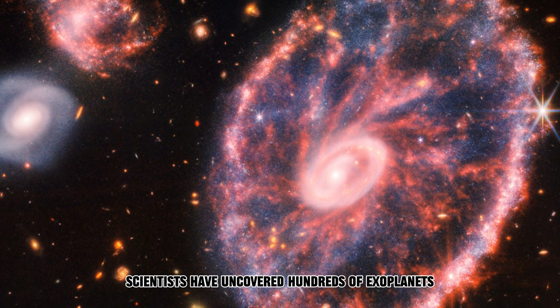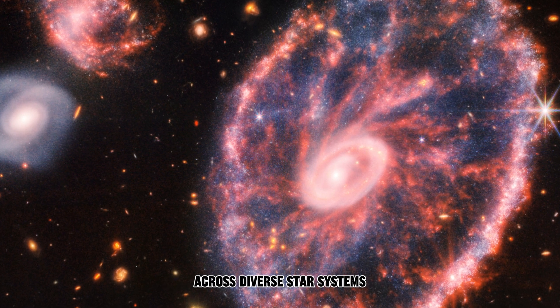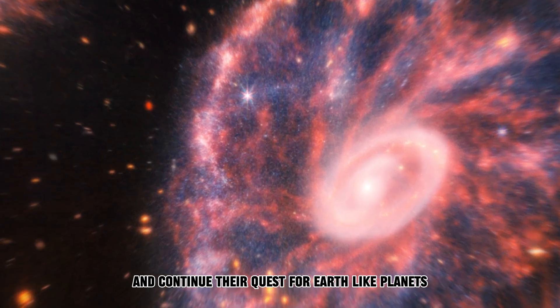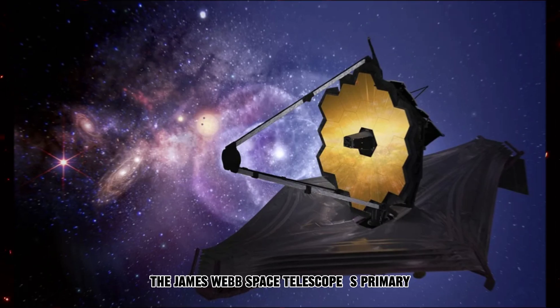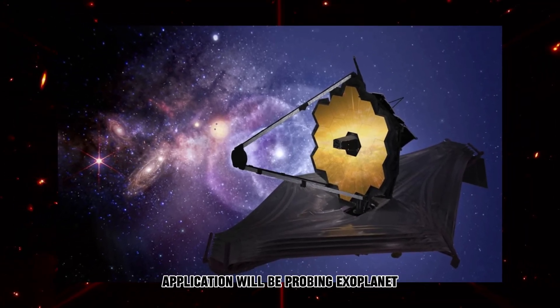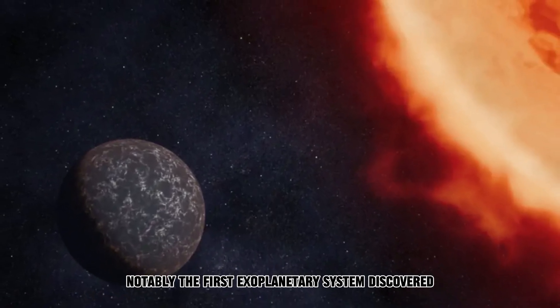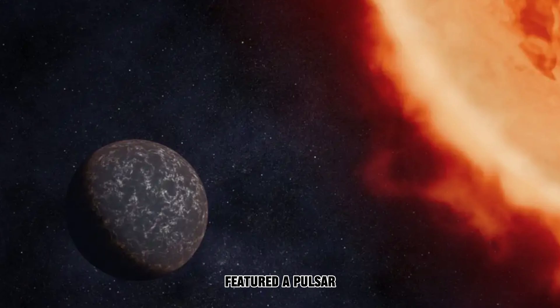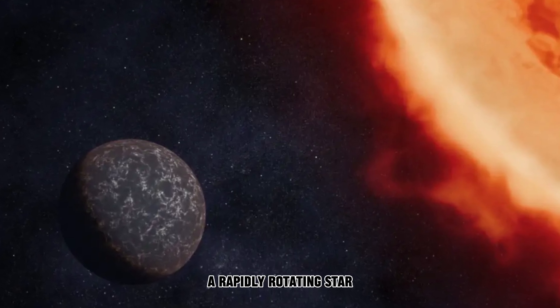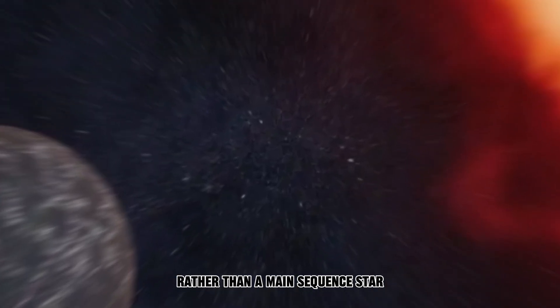Scientists have uncovered hundreds of exoplanets across diverse star systems and continue their quest for Earth-like planets. The James Webb Space Telescope's primary application will be probing exoplanet atmospheres for signs of life. Notably, the first exoplanetary system discovered featured a pulsar, a rapidly rotating star, rather than a main-sequence star like our Sun.